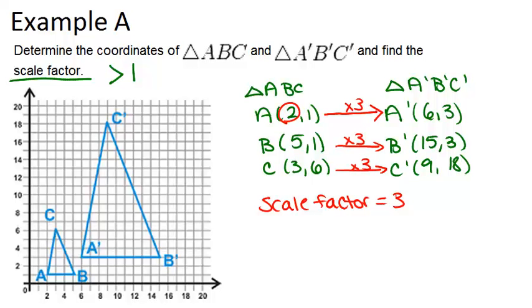And it will always be the case that the scale factor is multiplied by all of the original coordinates to create all the coordinates for the image points. Remember, this makes sense with what we originally said. Because the shape has gotten bigger in the dilation, the scale factor had to be greater than 1.